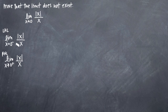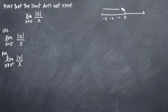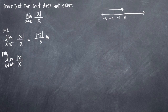With the left-hand limit, we're approaching zero from the negative side. So if we have our number line here and we're approaching zero, we have points like negative three, negative two, negative one, coming in from this side approaching zero. If we plugged in negative three for x, we'd get the absolute value of negative three divided by negative three, which gives us positive three divided by negative three, and we get negative one.